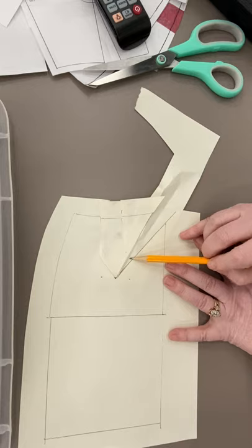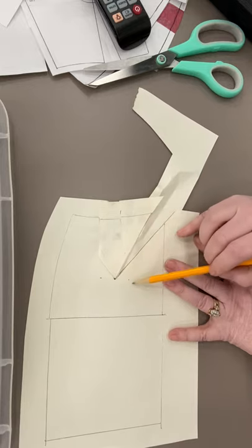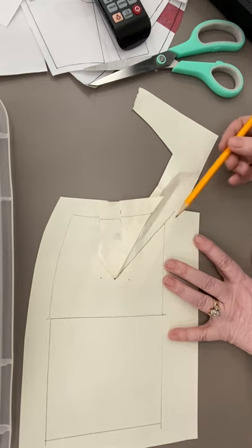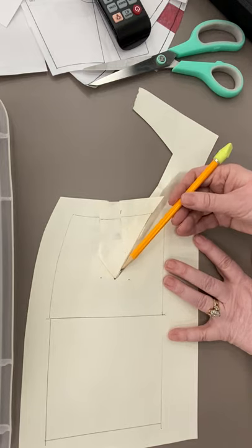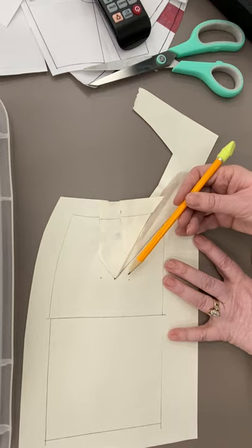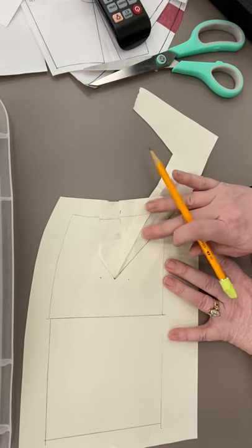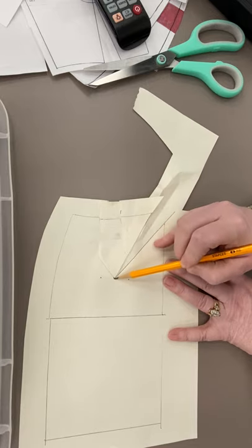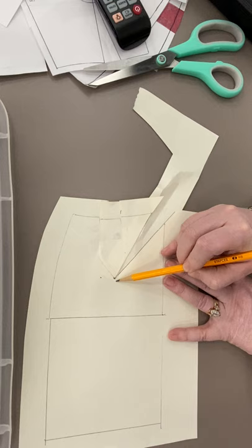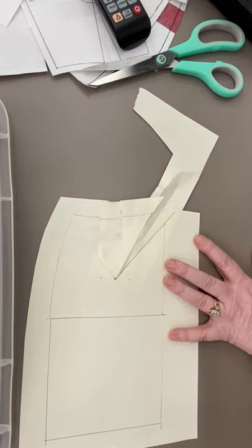And then where is your dart circle gonna be? The tip of your dart is here. Are you gonna have a dart circle? Are you gonna have your dart extend all the way to the common pivot point? Are you gonna shorten up your dart because your circle is your apex of your curve is right here and maybe you don't want your dart to extend all the way to the apex of the curve? Once again those are designer choices. You choose those choices, I'm not choosing those choices for you.